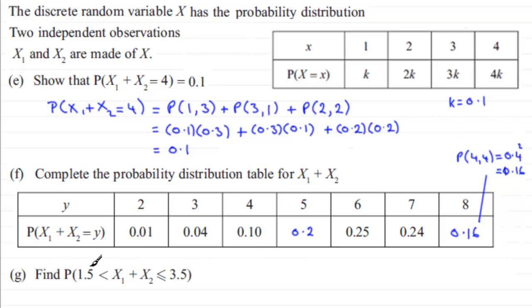Now in part G, we've got to find the probability of the sum of these two independent observations being greater than 1.5 but less than or equal to 3.5. In answer to that question, the probability of the sum of those two variables, X₁ and X₂, being greater than 1.5 but less than or equal to 3.5, is very easy. All you've got to do is look at the value 2, which is 0.01, plus the value that you get for 3, which is 0.04. You get a total of 0.05. I hope it's given you some idea now over those parts to the question.